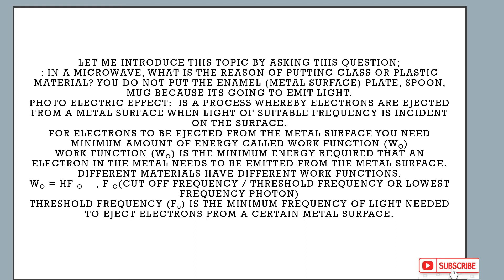Different materials have different work functions. The work function W₀ equals Planck's constant h multiplied by the cutoff frequency f₀. This subscript zero frequency is known as the cutoff frequency, threshold frequency, or lowest frequency — the minimum frequency of light needed to eject electrons from a certain metal.